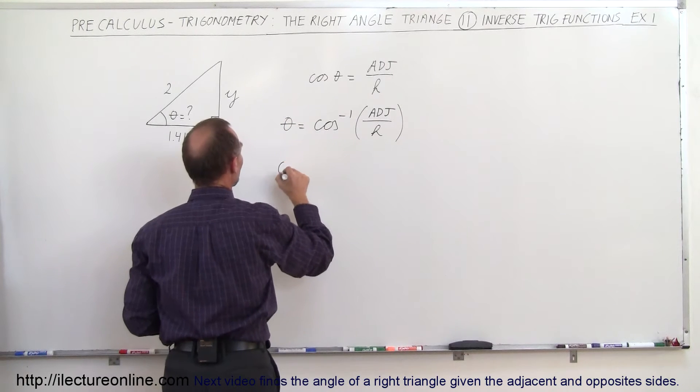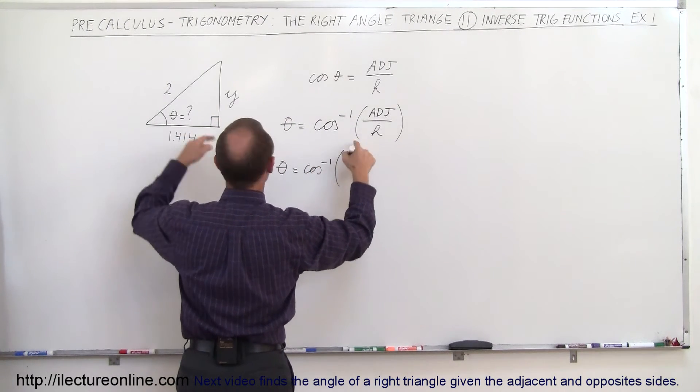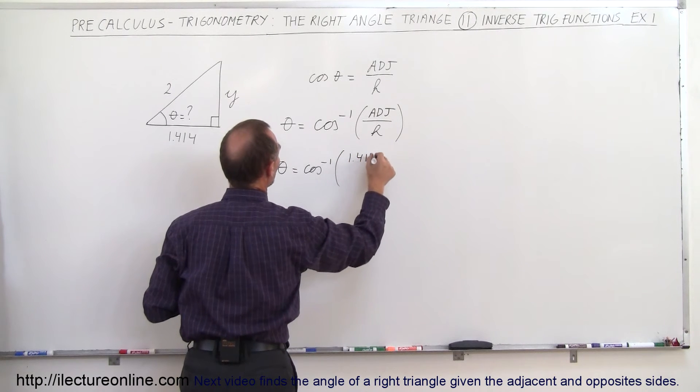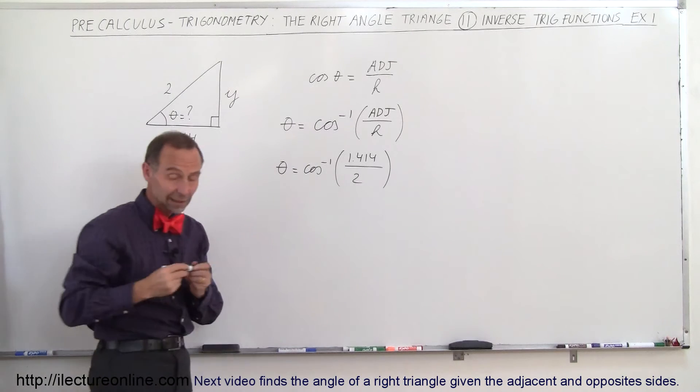Now we plug those numbers in there, so theta is equal to the arc cosine of the adjacent side, which is 1.414 divided by the hypotenuse, which is 2, and then all we have to do is get a calculator out.